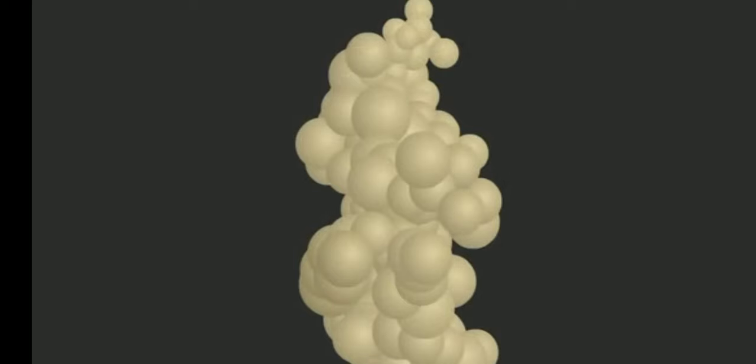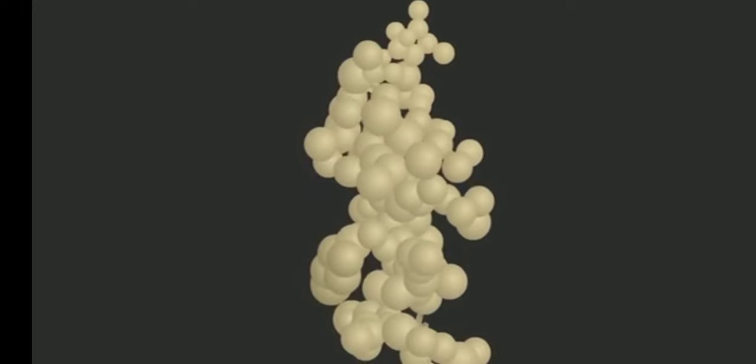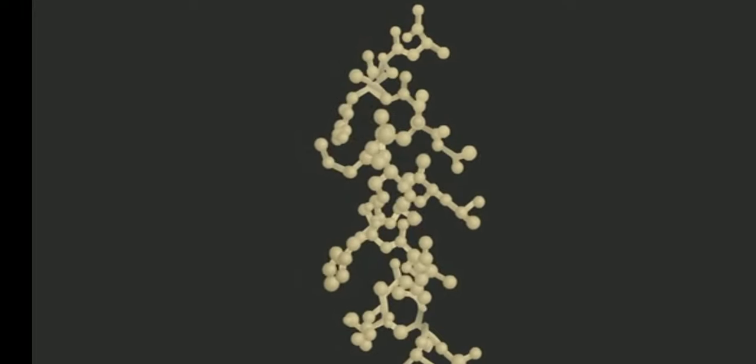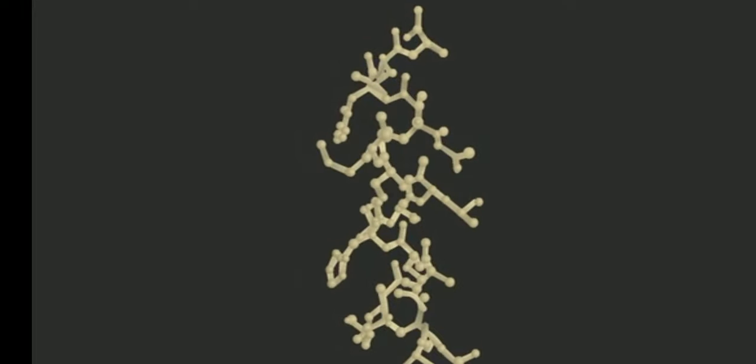Structure of Protein. Proteins have one or more polypeptide chains attached to one another. Each polypeptide chain has amino acids linked to one another in a specific sequence.